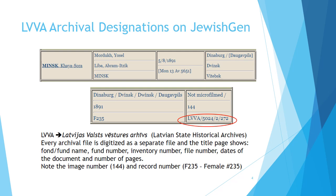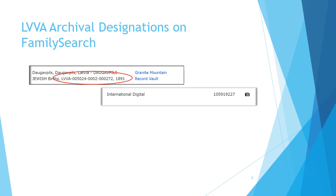On the JewishGen record there's also an image number — in this case 144 — and a record number which is F-235, meaning female number 235 in the birth records. On FamilySearch the designations are essentially the same but look a little different: instead of slashes between components they use hyphens and leading zeros, so 5024 becomes 005024 and 2 becomes 0002, followed by the year of the volume. There's also a digital file number and a camera icon indicating the item has been digitized and is available for viewing.